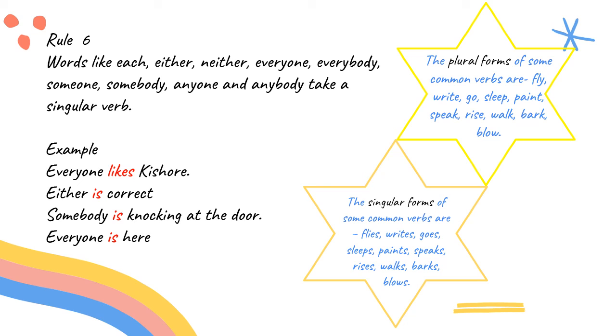The words like is are used as a singular verb. The plural forms of some common verbs are: fly, ride, go, sleep, paint, speak, rise, walk, bark, and blow.